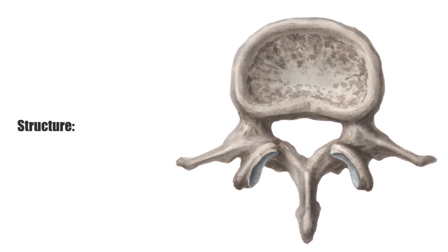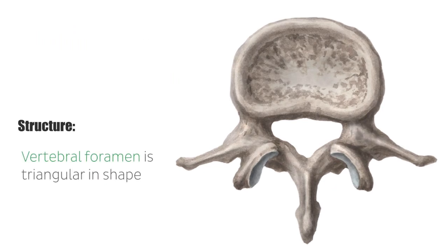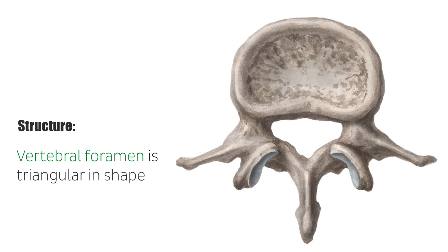The vertebral foramen is triangular-shaped within the arch, and lower in size than in the thoracic vertebrae, but smaller than in the cervical vertebrae.